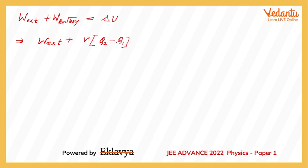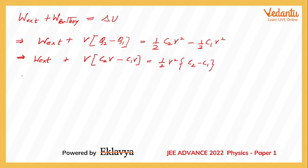That means the charge that has flowed through the battery, so that will be given by q2 minus q1 equals delta U. Now delta U will be written as half into C2 V squared, that's the final energy in the capacitor, minus half C1 V squared. So this becomes W external plus V equal to—now q2 can be written as C2 into V and q1 can be written as C1 into V. So again I can take out half V squared as the common quantity, and we get C2 minus C1.